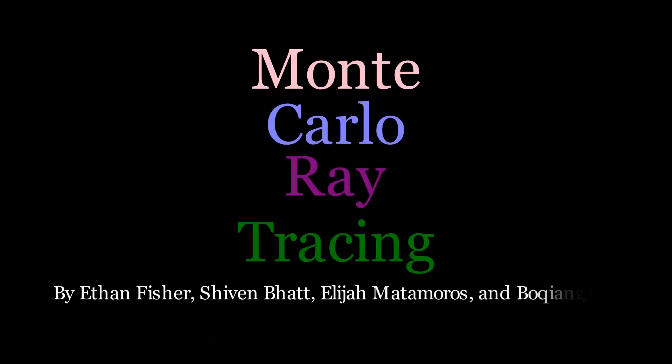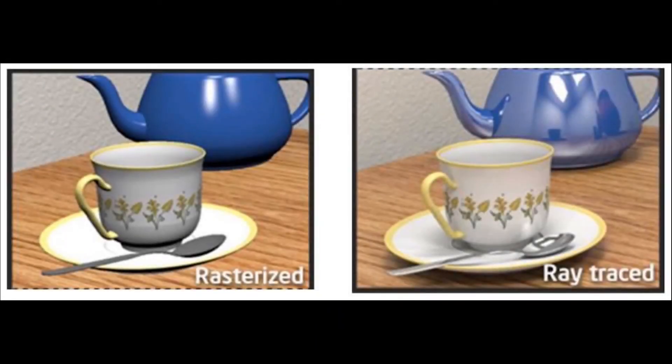In conclusion, Monte Carlo ray tracing is a fancy method of rendering very realistic scenes by tracing light rays back into the scene. We can accurately and efficiently render fancy effects like reflection with Monte Carlo ray tracing, something that is near impossible for rasterization. Although Monte Carlo ray tracing is more computationally expensive than rasterization, it looks much more realistic.